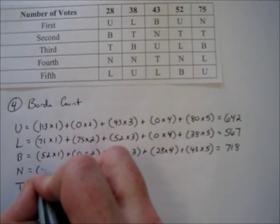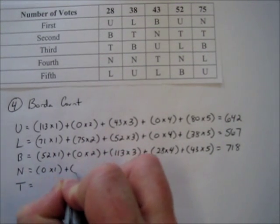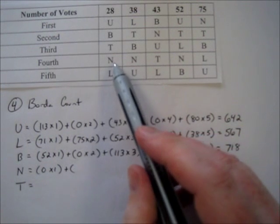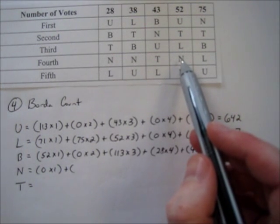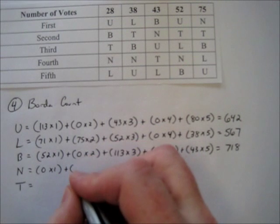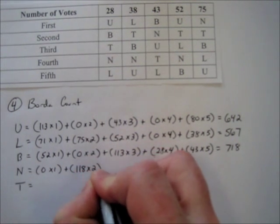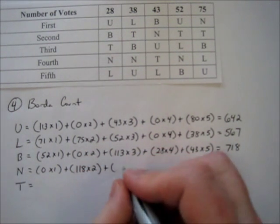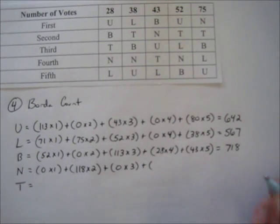For Nelly: nobody put Nelly in last place, but 28, 38, and 52 — totaling 118 — gave Nelly next-to-last place votes. There are no third-place votes for Nelly.